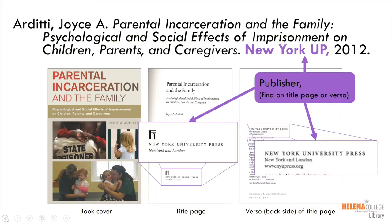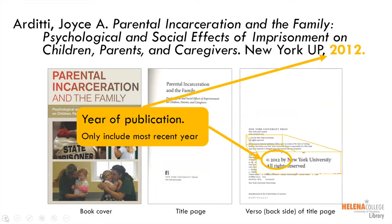Next, write the publisher, followed by a comma. This is usually found on the verso of the title page near the copyright date. It may also appear right on the title page. Finally, type the year of publication, followed by a period. Find it with the rest of the publication information on the verso of the title page, usually marked with a copyright symbol.